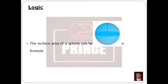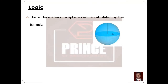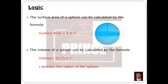First, we will talk about the logic in the program. The surface area of a sphere can be calculated by the formula: surface area is equal to 4πr². The volume of a sphere can be calculated by the formula: volume is equal to 4/3 × π × r³. R denotes the radius of the sphere. Using these formulas, we will implement the program.